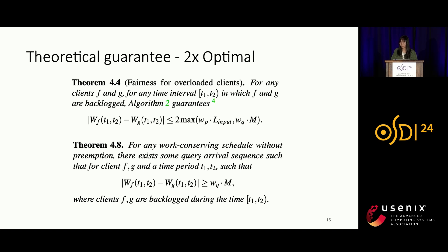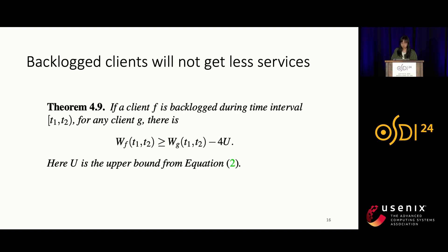Our algorithm therefore delivers a two-times optimal bound. For non-overloaded clients, we prove that if a client f is backlogged during time interval T1 to T2, then for any other client g, the service received by f is greater than the service received by g minus a constant — ensuring that backlogged clients will not get less service than other clients.